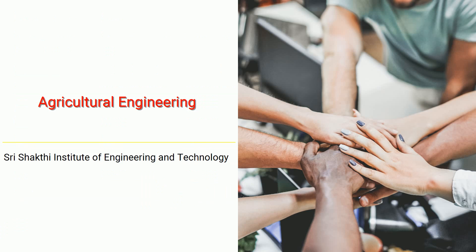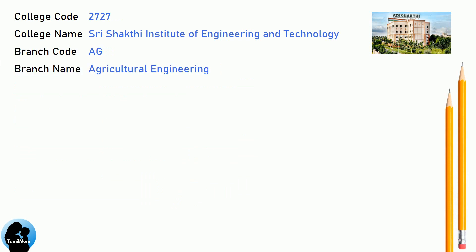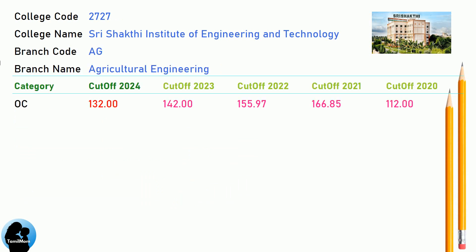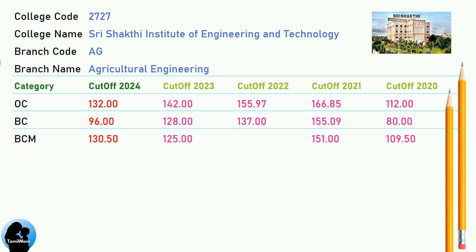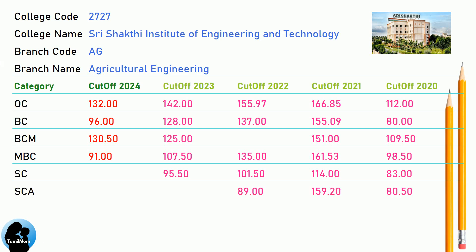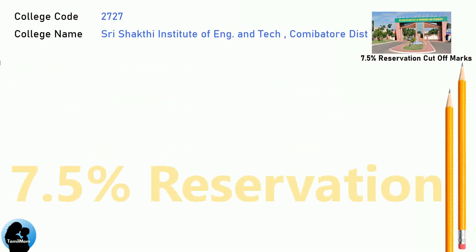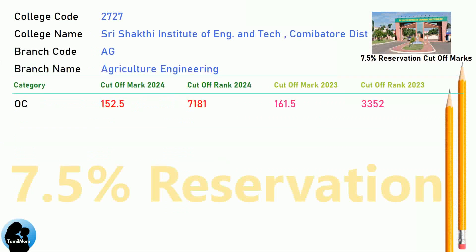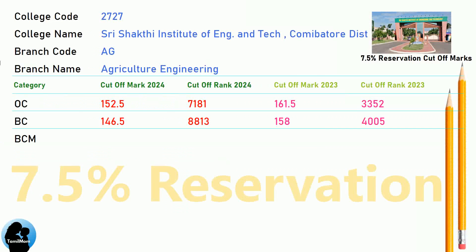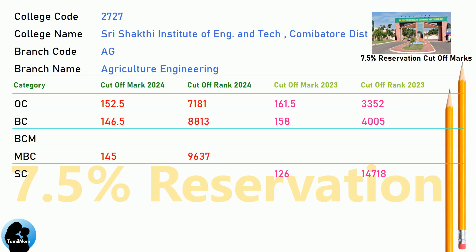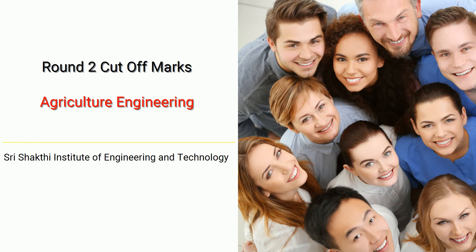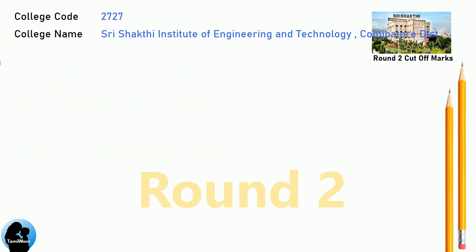DNA Cut-Off for Shri Shakti Institute of Engineering and Technology in Agricultural Engineering. DNA 7.5 Reservation Cut-Off for Shri Shakti Institute of Engineering and Technology in Agriculture Engineering. DNA Round 2 Cut-Off for Shri Shakti Institute of Engineering and Technology in Agriculture Engineering.